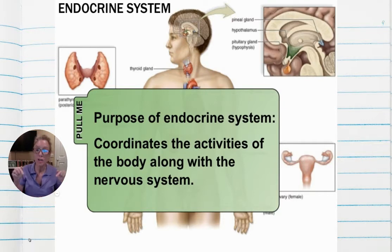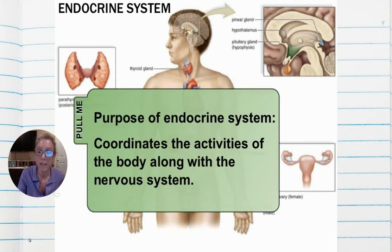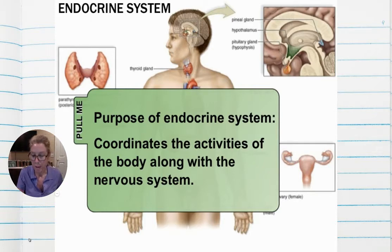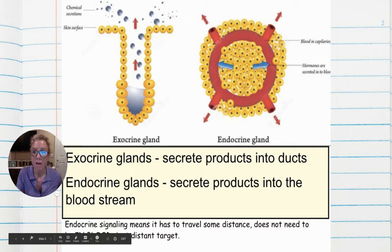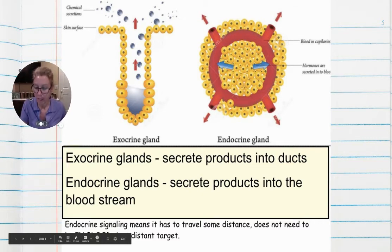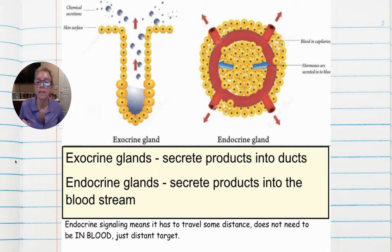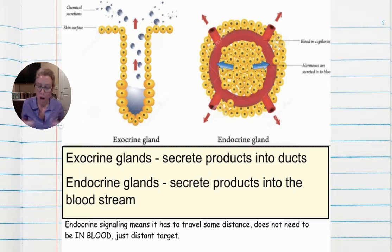In your notes under the introduction, hormones are defined as chemicals that affect the behavior of other glands or tissues. Endocrine glands secrete hormones. Hormones influence the metabolism of cells, growth and development of body parts, and homeostasis.